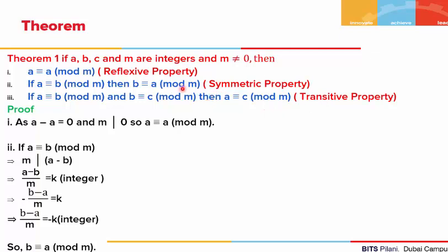All these properties can be checked by taking some particular integer values for a, b, c and m. But here, let us give a general proof. Coming to the first property, we can see that the difference of a and a is 0. And whatever value of m we take, it will always divide 0. So a is congruent to a mod of m.